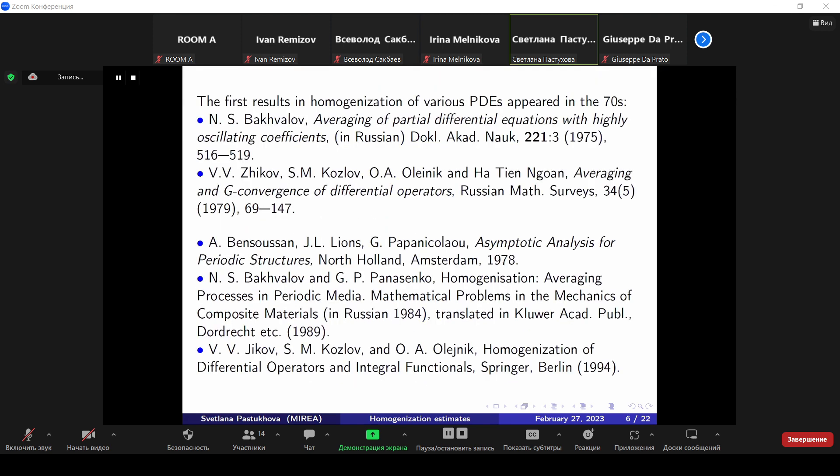You see an equation where the role of right hand side function is played by the vector E_j from the canonical basis in R to the d. The solution N^j satisfies the integral identity. We define J by J_ij = a_ij(x - ∇N^j(x)), j = 1,...,d. The first results in homogenization of various PDEs appeared in the 70s. Nowadays, there is a vast literature in homogenization. I mentioned here only the first fundamental papers of the 70s, that is by the group of authors among whom you see Zhikov, Kozlov, Oleinik, who together with Bakhvalov are the founders of the homogenization theory. And I mentioned here also fundamental monographs in homogenization theory by Suslina, Papa Nikolaou, by Bakhvalov and Panasenko, and by Zhikov, Kozlov and Oleinik.